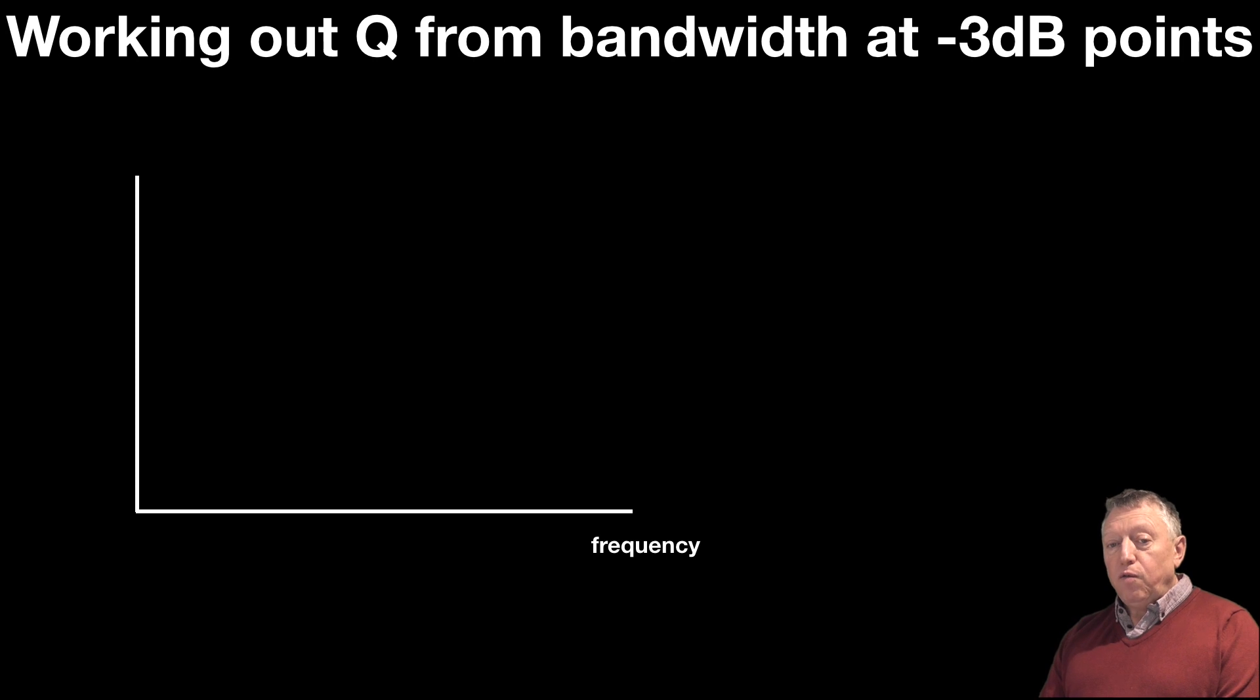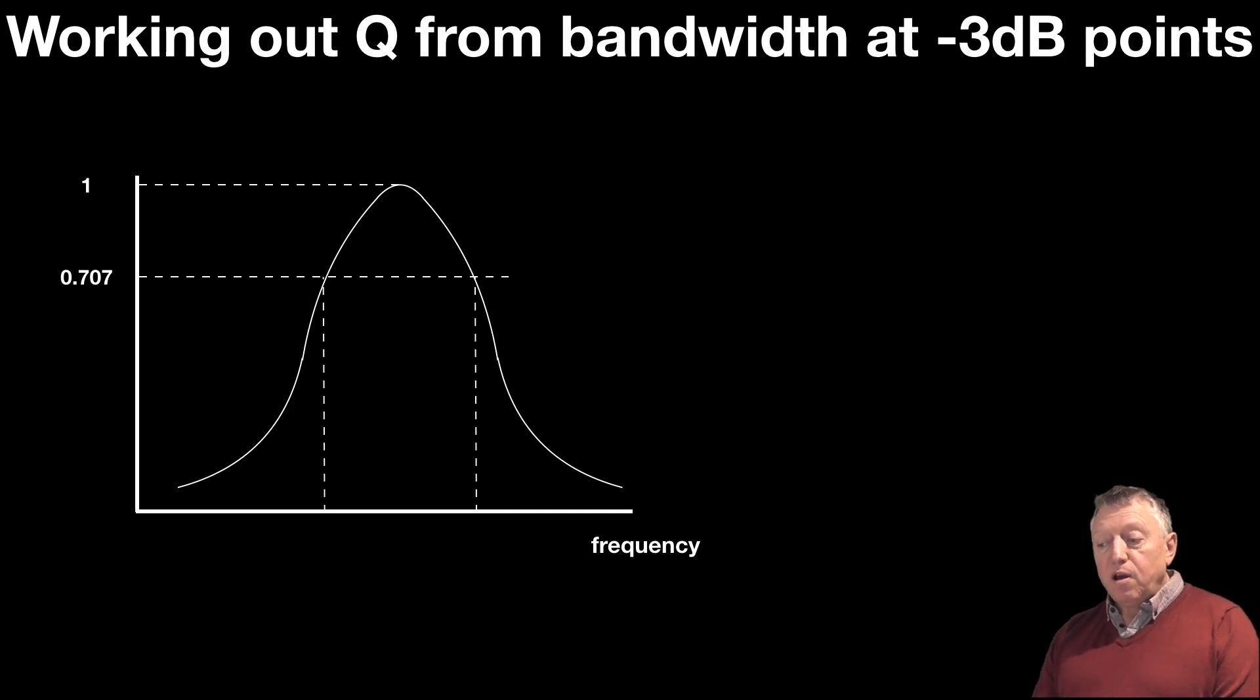You can also work out Q from the shape of the curve, the bandwidth at the 3 dB points. There's a curve, and there at the top is resonance. And if we said that was 1, then 0.707, or at the half power points, the 3 dB points, we could work out the width there between F2 and F1. In other words, F2 minus F1. And that gives us the bandwidth of the curve at the 3 dB points.